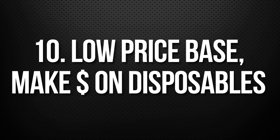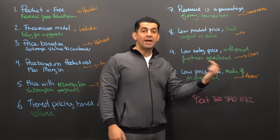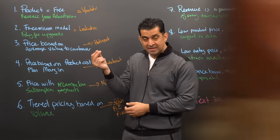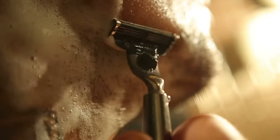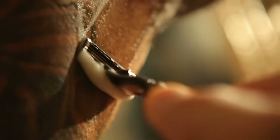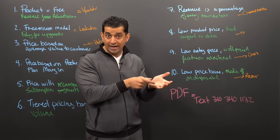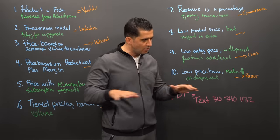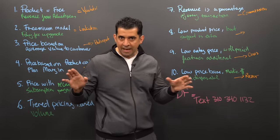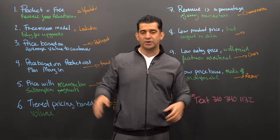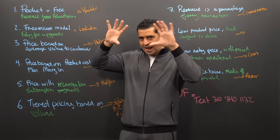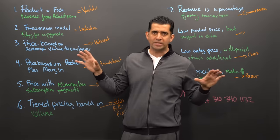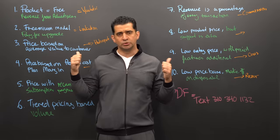Last but not least, number ten is very simple: low price, but the money is made based on disposables. For example, I sell you a razor stick for $10, but I know you've got to come back and buy the razors every time you're done shaving because it goes from green to white. I'm making my money on disposables. It's a very big Procter & Gamble type of business model, but it's very effective. It's all about how you want to set up your business model to generate revenue — there are many different ways of doing it, and these are 10 of them.